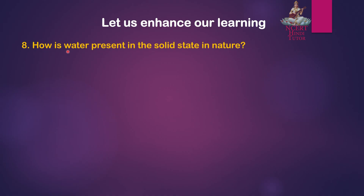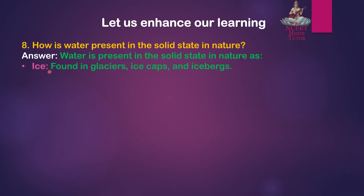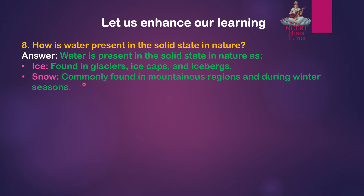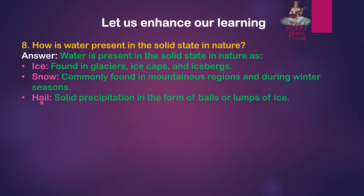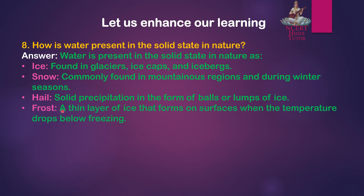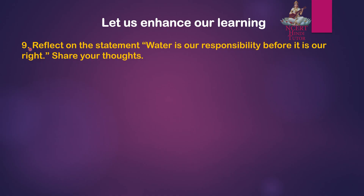Question 8: How is water present in the solid state in nature? Answer: Water is present in the solid state in nature as: Ice — found in glaciers, ice caps, and icebergs; Snow — commonly found in mountainous regions and during winter seasons; Hail — solid precipitation in the form of balls or lumps of ice; and Frost — a thin layer of ice that forms on surfaces when the temperature drops below freezing.